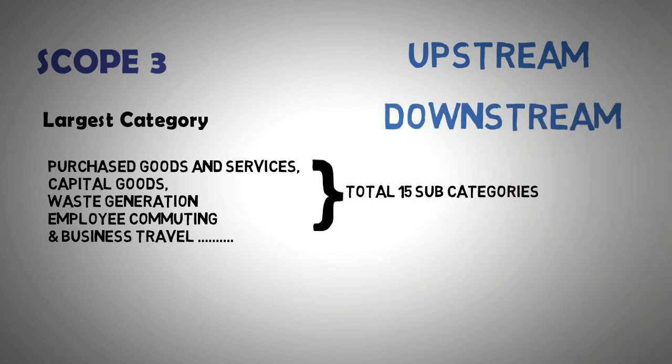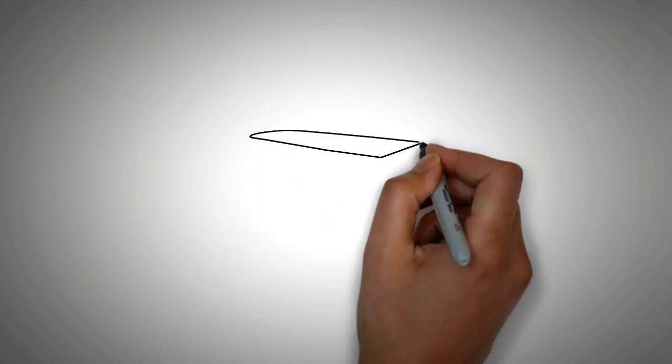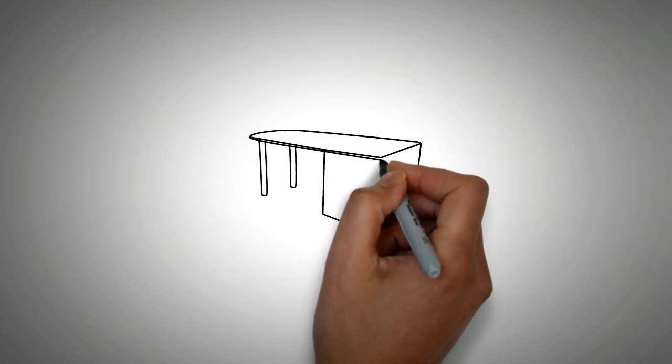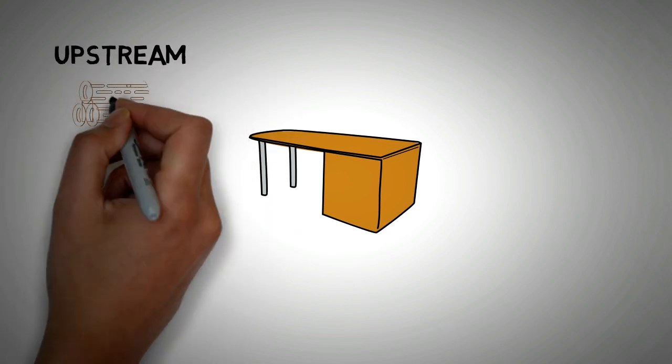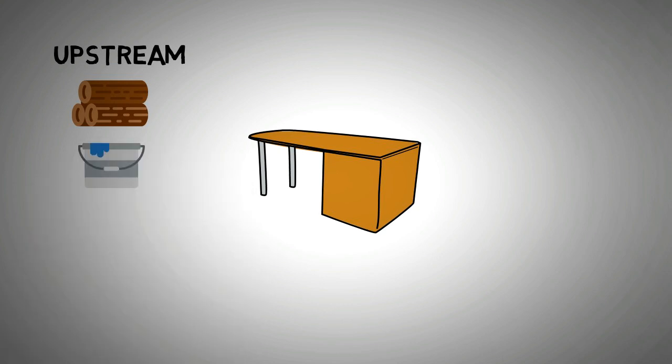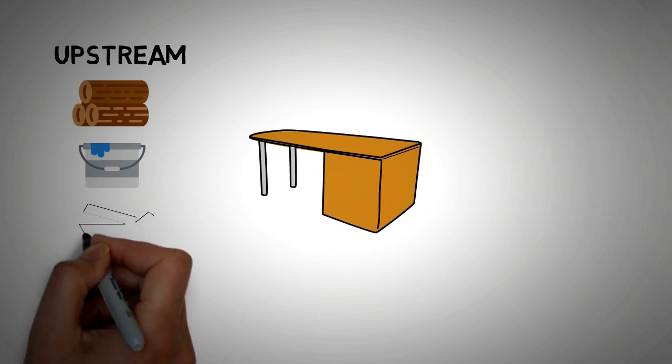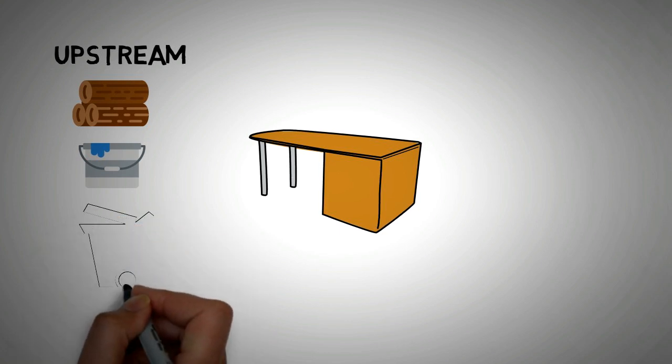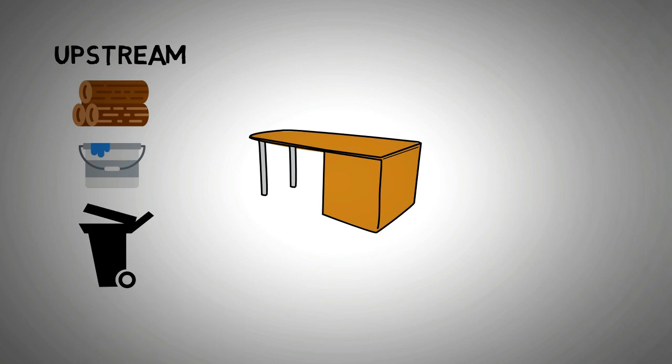Suppose your organization produces a product and let's say that product is a table. All the emissions that result in acquisition of wood and other materials, nail, paint, varnish, etc., and its transportation to the site are upstream Scope 3 emissions. The table is made which results in a lot of wood chip and sawdust waste. This wastage will also be accounted for in the upstream emissions, unless recycled.